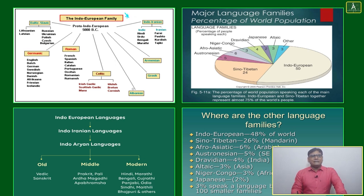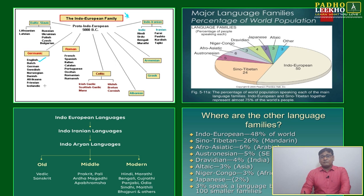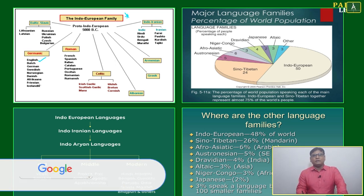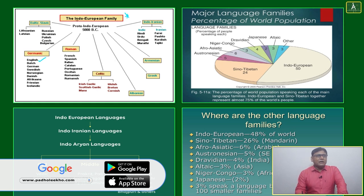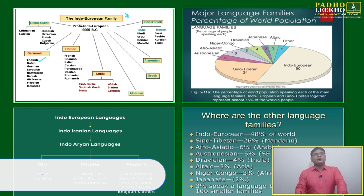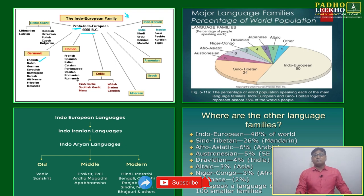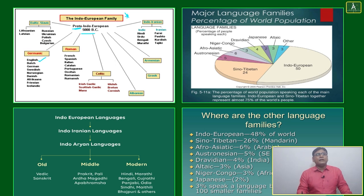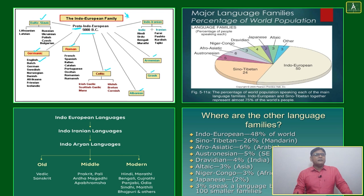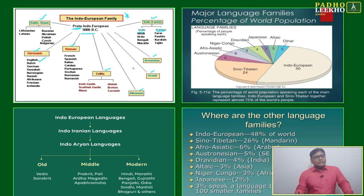Our main interest is in the Indo-European family since English comes from it, and we are trying to learn about English literature and language. Around 5000 BC, there was Proto-Indo-European — 'proto' means initial, referring to the initial period of the Indo-European language family. From this developed Baltic, Germanic, Roman, Celtic, Albanian, Greek, Armenian, and Indo-Iranian branches.